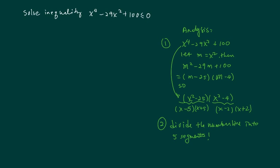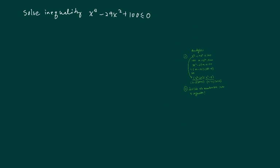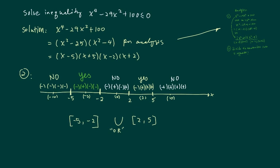Let's write up the equation. Alright, so here's the solution. Per our analysis earlier, we factor this one all the way down to x minus 5 plus 5 minus 2 and plus 2 here. From here, we're going to divide the number line into 5 segments based on which each one of them equal to 0.